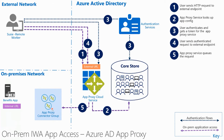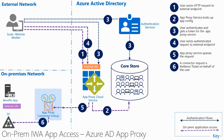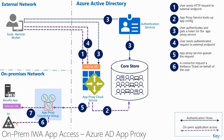With all these pieces of data, the connector requests a Kerberos ticket for the benefits site using Windows APIs and Kerberos constrained delegation in step six. With that, it performs the HTTP request to the internal web server in step seven. Once the connector receives the HTTP response, it sends it back to the cloud service in step eight, which in turn sends it back to Susie in step nine.